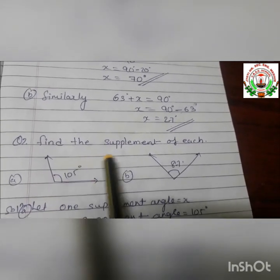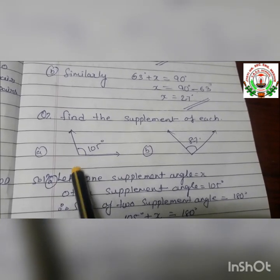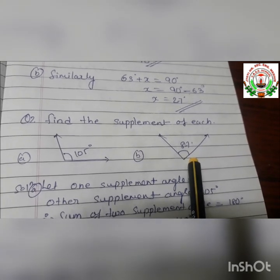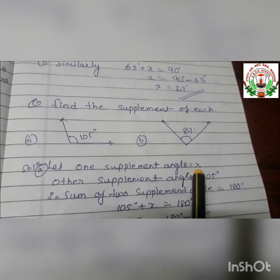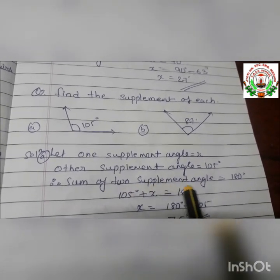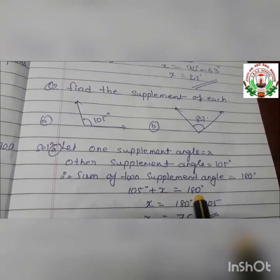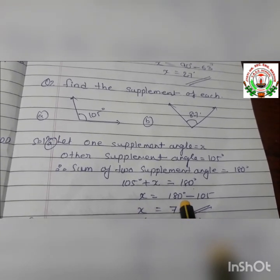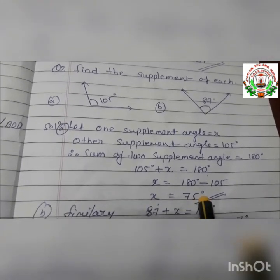Question number 2: find the supplement of each. Part A involves 105 degrees and part B 87 degrees. For part A, let one supplementary angle be X and the other is 105 degrees. Since the sum of two supplementary angles is 180 degrees, 105 plus X equals 180, so X equals 180 minus 105, which gives X equals 75 degrees.